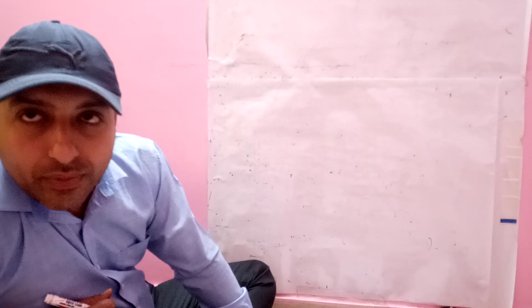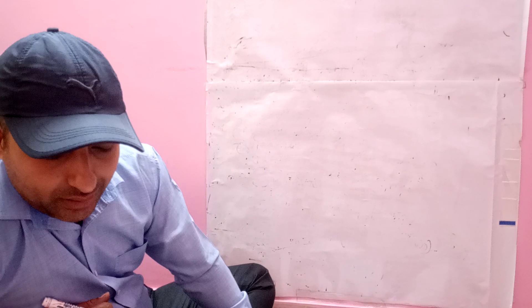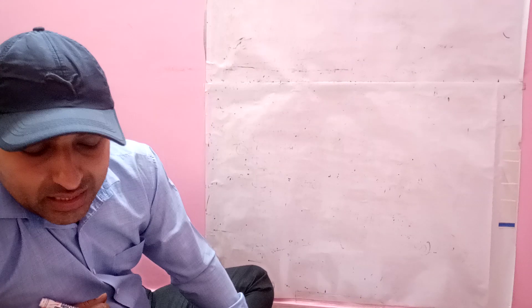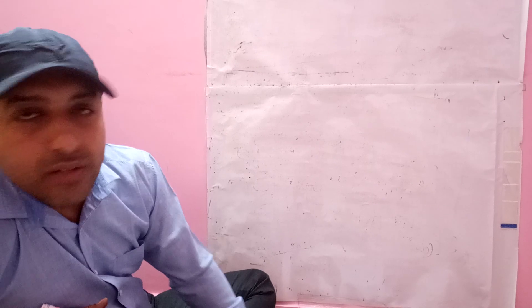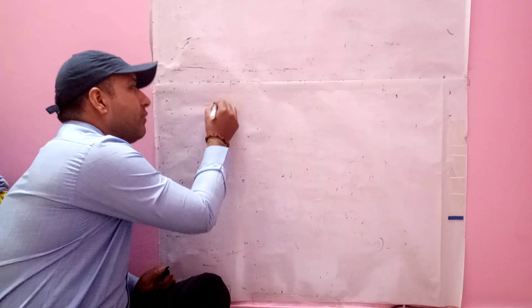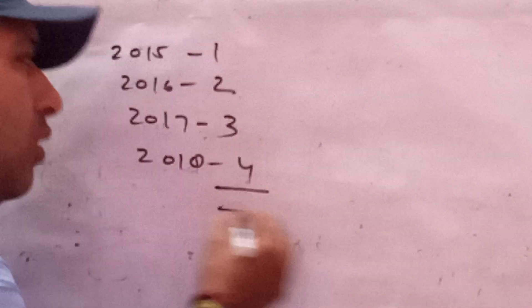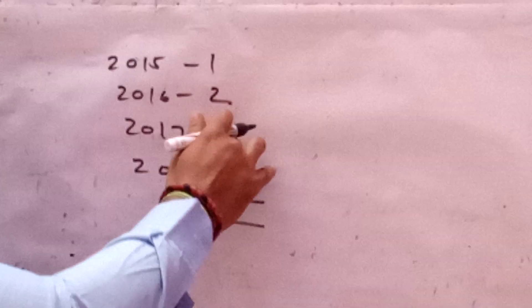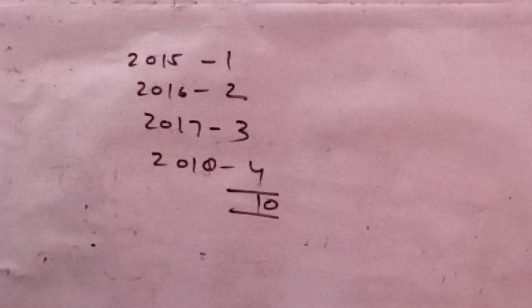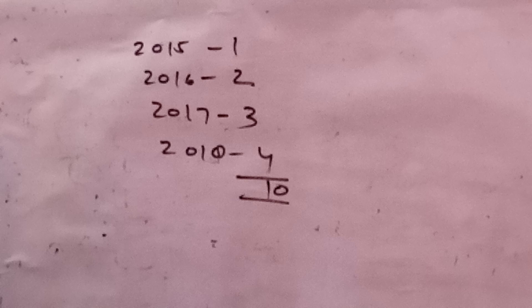If the profits are given for 2015, 16, 17, and 18, and the average profit is to be calculated, then weights will be assigned as follows: 2015 gets weight 1, 2016 gets 2, 2017 gets 3, and 2018 gets 4. So 4 plus 3 is 7, plus 2 is 9, plus 1 is 10. The total weight equals 10.